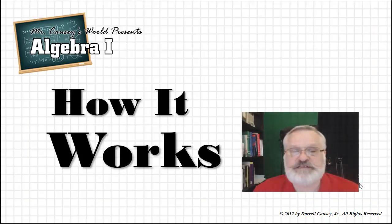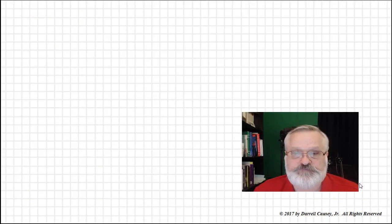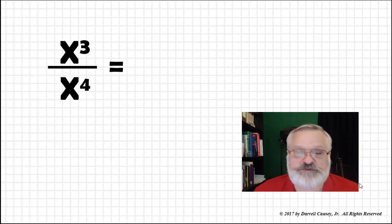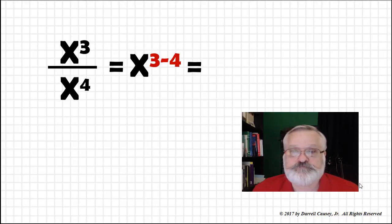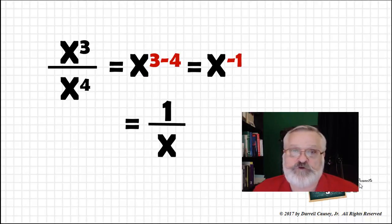Alright, let's look and see how it works. x cubed over x to the fourth equals, well that's going to be x to the three minus four according to the quotient rule. And that will give us x to the negative one, and we would rewrite that as one over x. That's all there is to it.